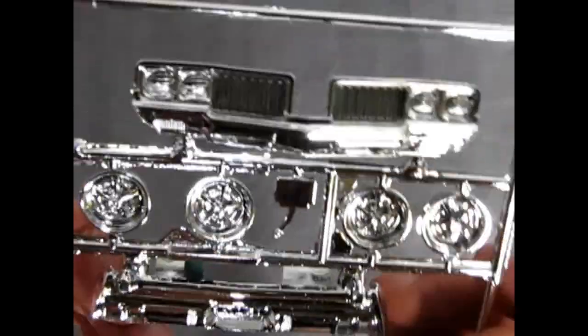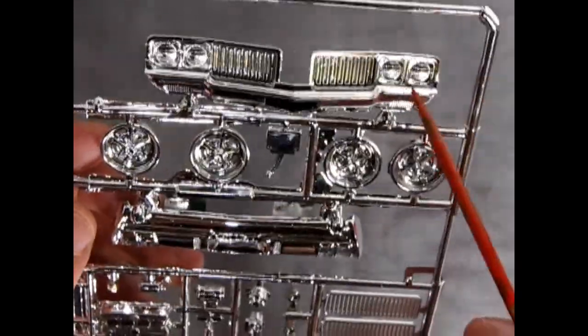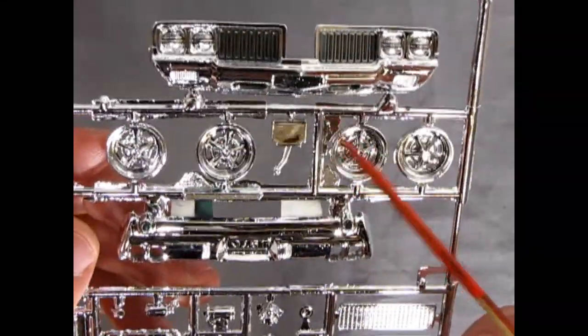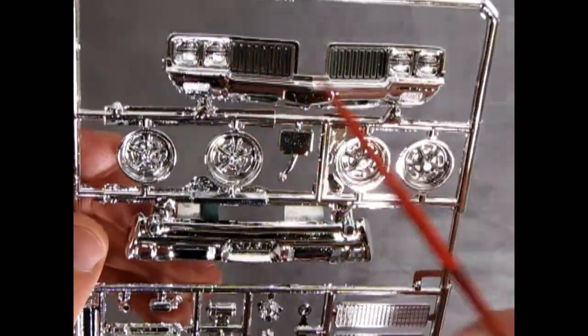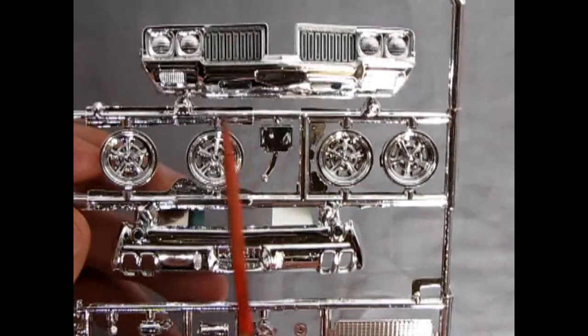As you can see, the front end is quite nice. Nice chrome detail on there. Headlights molded in place just like our 60 Plymouth police car. A lot of Johans had these molded in place. Didn't really give you a clear lens in there.